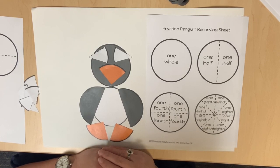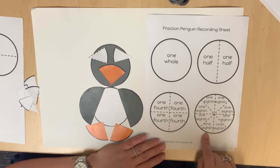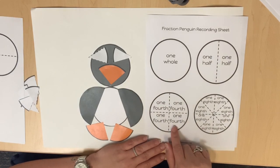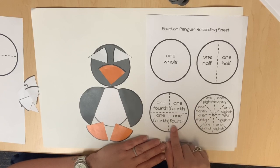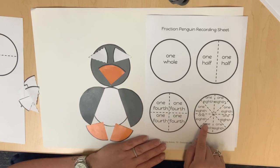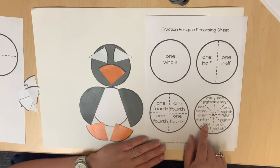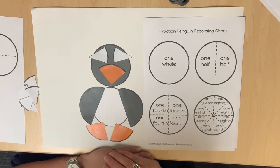Finally, have students observe the whole circle that was partitioned into fourths and the whole circle that was partitioned into eighths. What do you notice about the number of fourths compared to the number of eighths? There are fewer fourths and more eighths. What do you notice about the size of the fourths compared to the size of the eighths? The fourths are larger in size and the eighths are smaller in size.